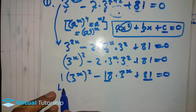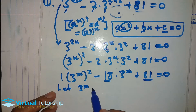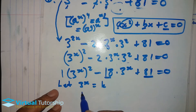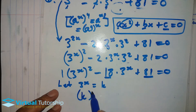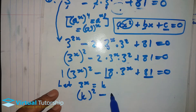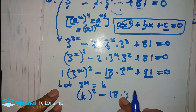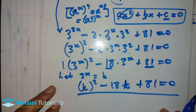So, if we let 3 exponent x be represented as k — some people know this as the k-method — then it's going to be k squared minus 18 times k — replacing 3 exponent x with k — plus 81, equal to zero. So now we end up in a standard quadratic equation.